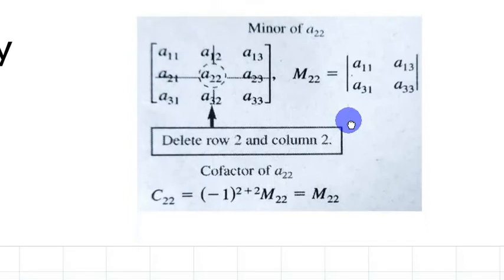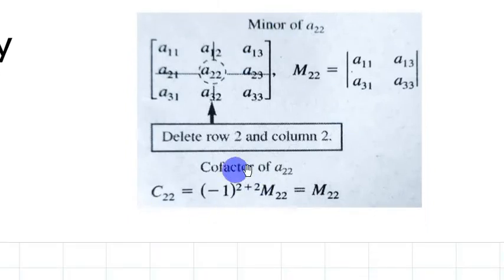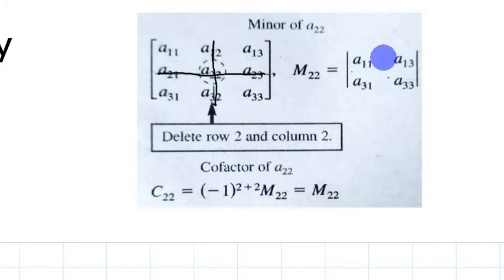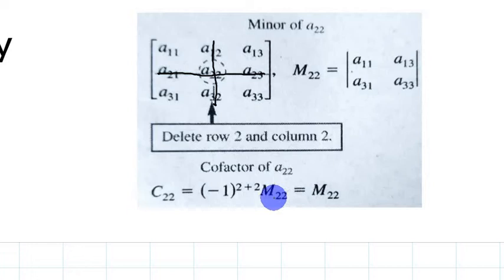As another illustration, if we want to find the minor and the cofactor of A sub 2 2, for the minor we first remove the second row and the second column. We get the sub-matrix with elements A sub 1 1, A sub 1 3, A sub 3 1, and A sub 3 3. Finding the determinant of this sub-matrix gives us the minor. Multiplying this minor by negative 1 raised to 2 plus 2 gives us the cofactor of A sub 2 2.